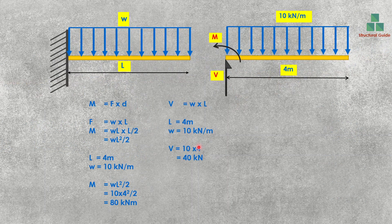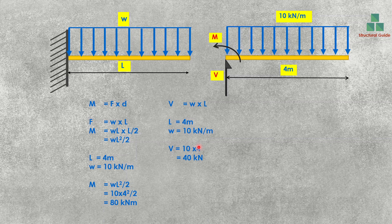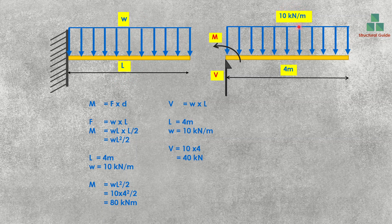Now let's see the calculation of bending moment and shear force for the uniformly distributed load (UDL) case. When a uniformly distributed load is applied, the same theory can be used to calculate the support reactions. Here we have a uniformly distributed load W kN per meter. In this example, W is 10 kN/m and the span is 4 meters.